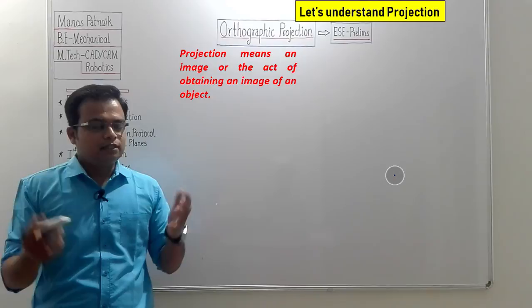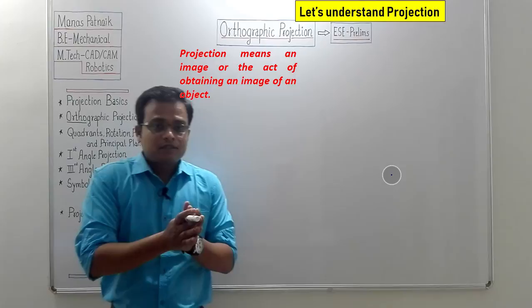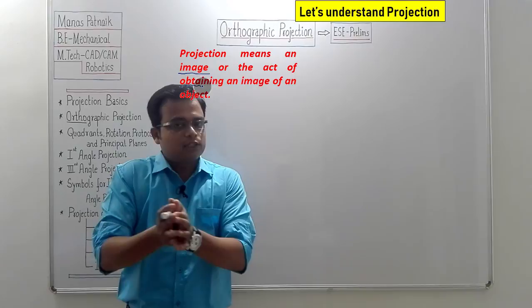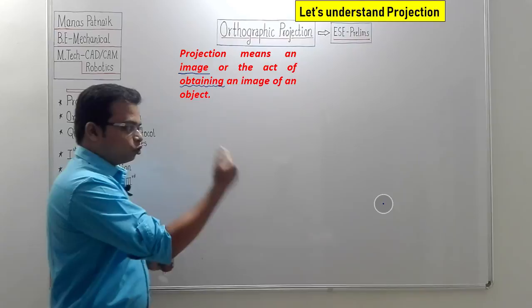Let us begin by understanding the meaning of projection. In general, if you refer to a dictionary, projection is nothing but an image. In the most general sense, projection is referred to as an image, and in a technical sense it is referred to as the act of obtaining an image. So the image itself can be called a projection, and the entire process of obtaining that image can also be referred to as projection.